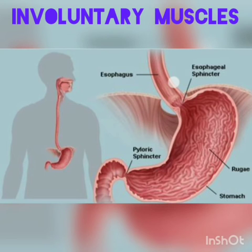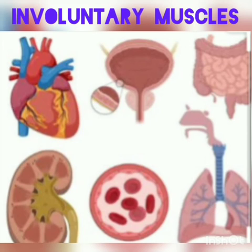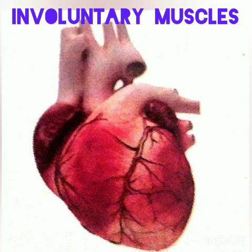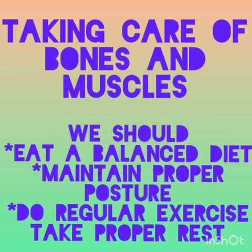Involuntary muscles. The muscles that we cannot control are called involuntary muscles. The muscles which carry out actions like breathing, blood circulation, and movement of food through the digestive system are called involuntary muscles. To take care of our bones and muscles, we should eat a balanced diet, maintain proper posture, do regular exercise, and take proper rest. Thank you, my dear students!